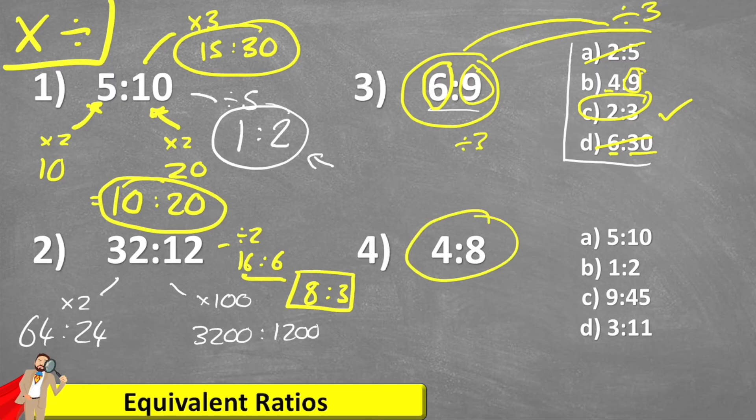What about question four? Four to eight. Well, I can see already four to eight is one half because four is half of eight. So B, I know, is going to be an equivalent ratio. But what about A? A is also an equivalent because five is half of 10. But C is not equivalent and D is also not equivalent.